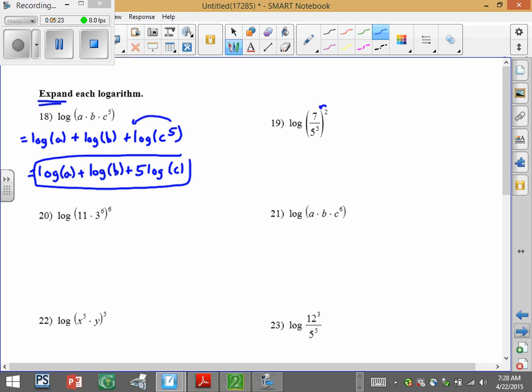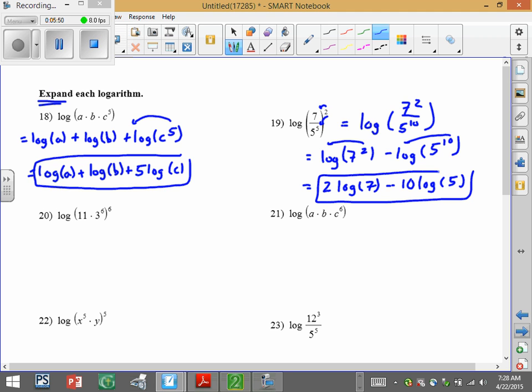Here go ahead and send that 2 all the way through. So we end up with log 7 squared over 5 to the tenth. And since we have division here, I'm doing log 7 squared minus log 5 to the tenth. And then bring those exponents to the front. So we have 2 log 7 minus 10 log 5 here.